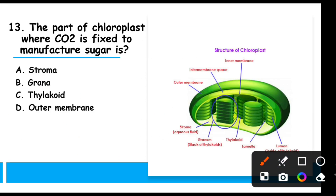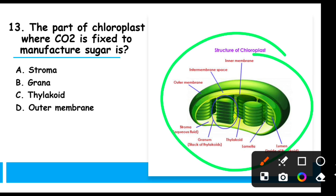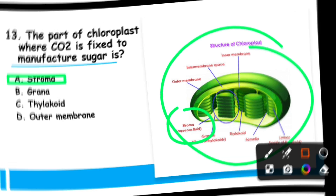MCQ 13: The part of the chloroplast where CO₂ fixes to manufacture sugar is — in plants, the chloroplast is the organelle performing photosynthesis. It is a double membrane organelle, and its stroma, the liquid part, is where carbon dioxide fixation occurs and sugar is produced.